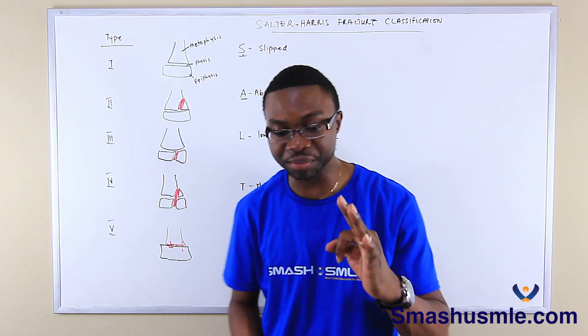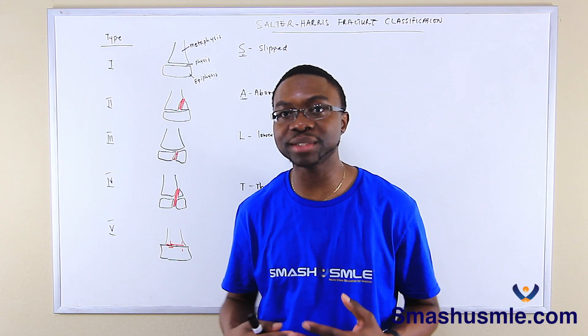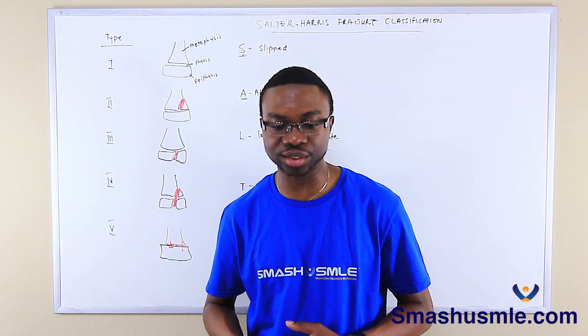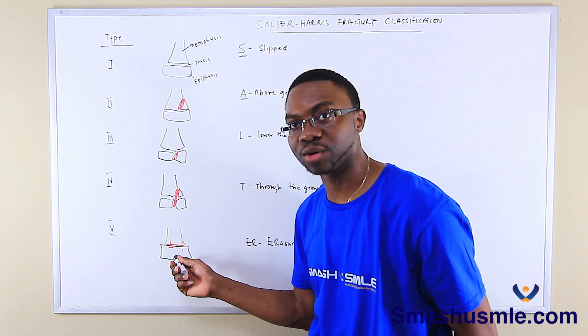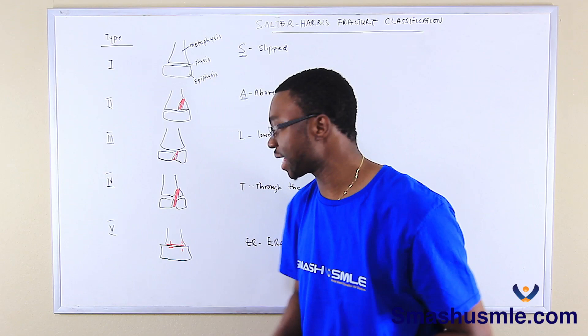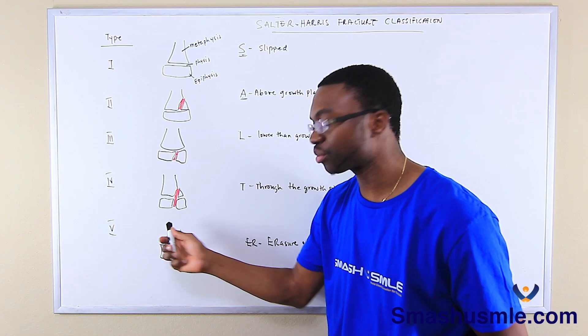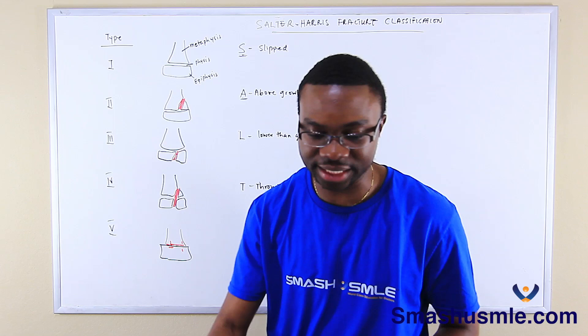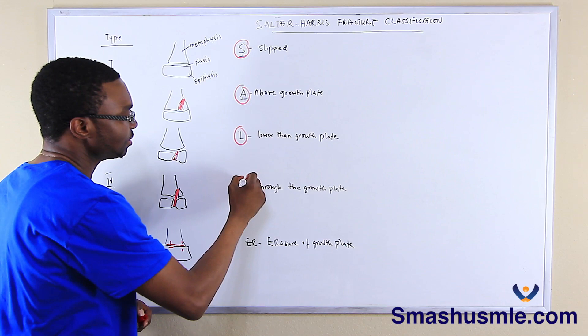Type three is often unstable. Type four is prone to limb length discrepancies, and type five is also prone to limb length discrepancies — because if you erase the growth plate, this is a problem for the child to grow. As they grow older, their limbs won't be equal; one leg will be longer than the other. The key thing is we just spell S-A-L-T-E-R.